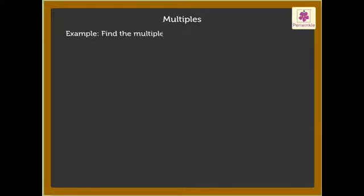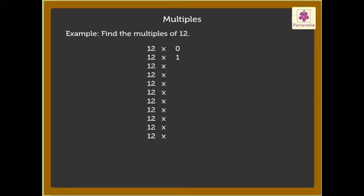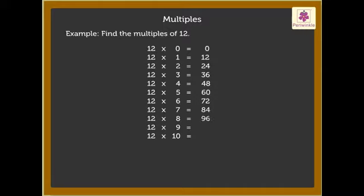Let us find the multiples of 12. When we multiply 12 by 0, 1, 2, 3, 4, 5, 6, 7, 8, 9, 10 and so on, we get 0, 12, 24, 36, 48, 60, 72, 84, 96, 108, 120 and so on as the products. So here, the products obtained are nothing else but the multiples of 12.